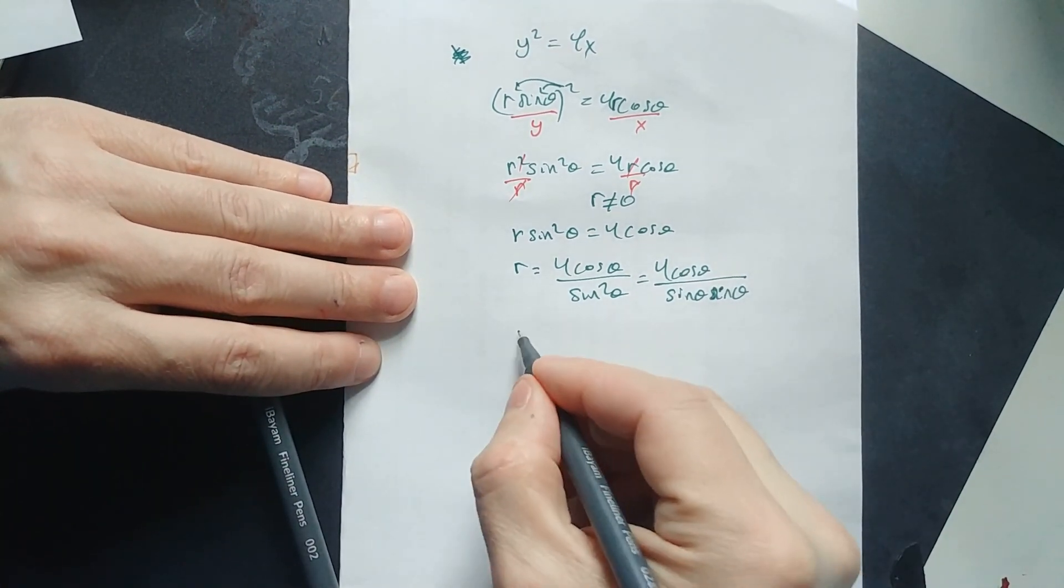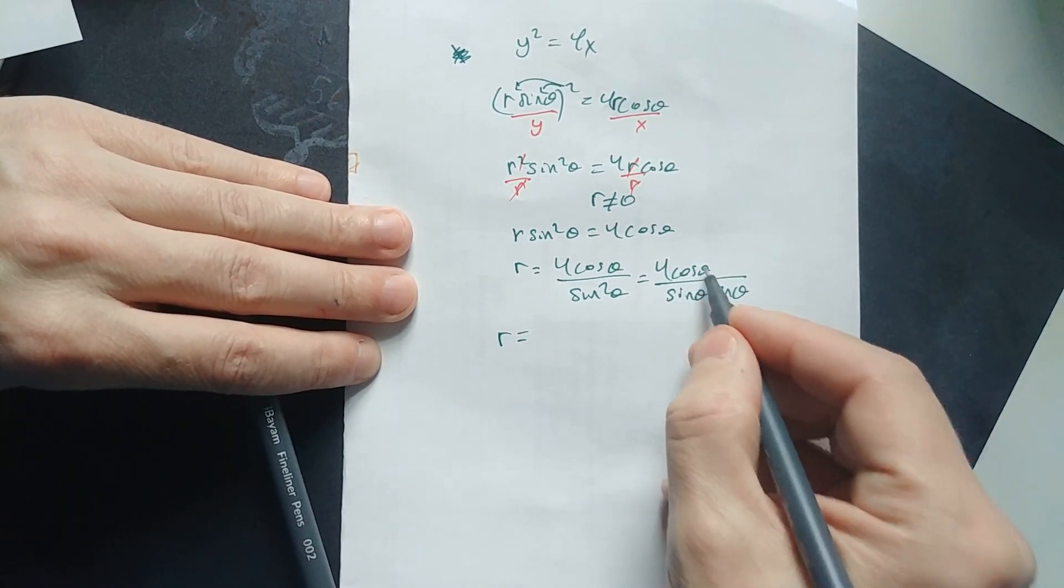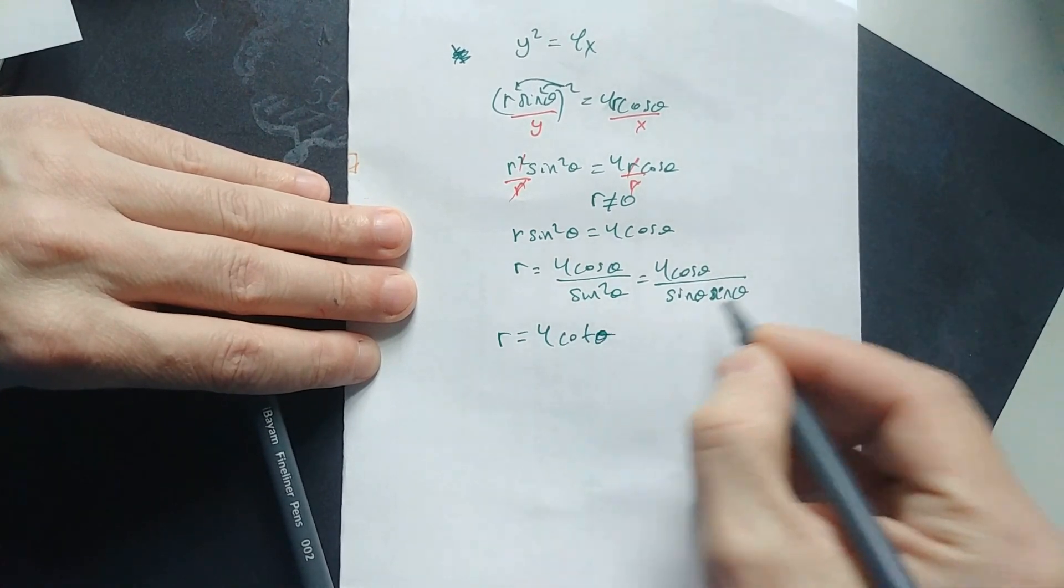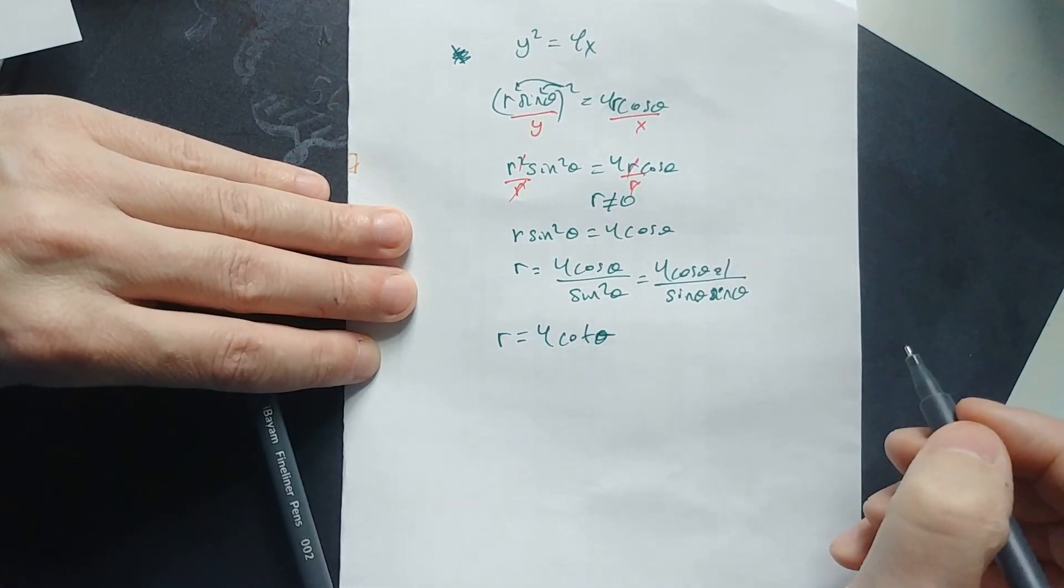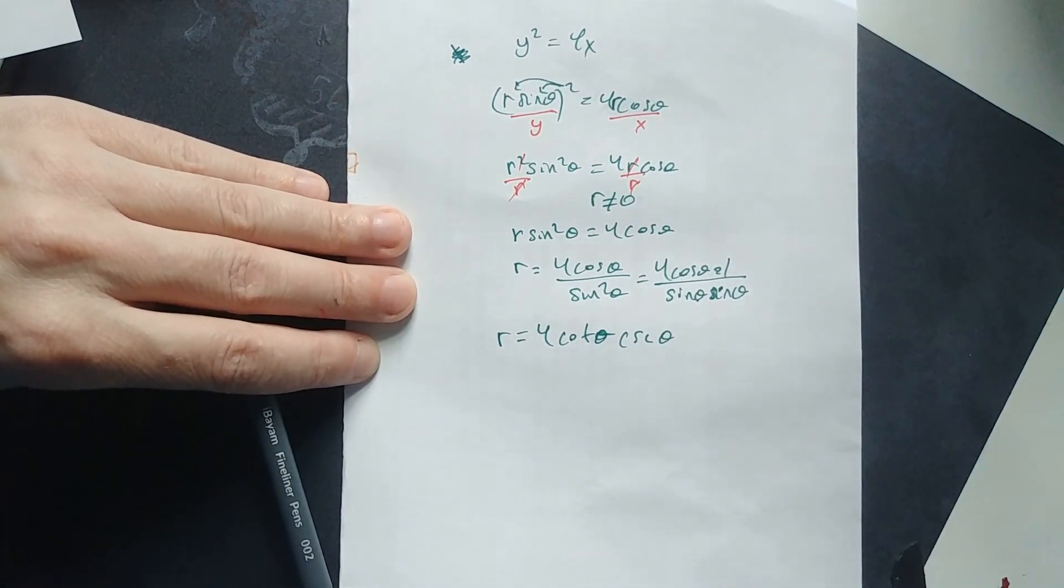We have to do that because then usually we express the answer as r equals, and you can separate this into cosine over sine. So it's going to be 4 cot θ, and then there's an extra 1/sin θ left over, so that's csc θ. That's your answer.